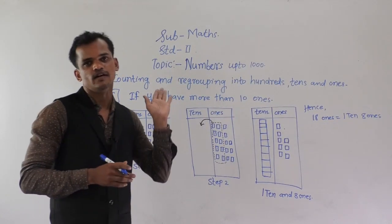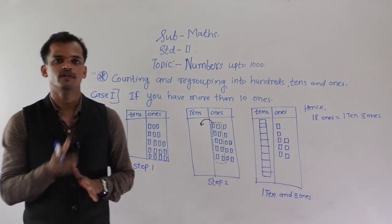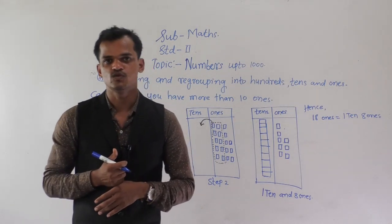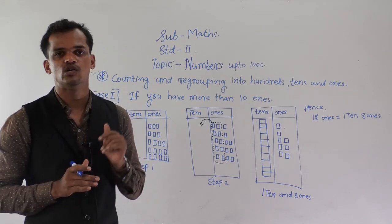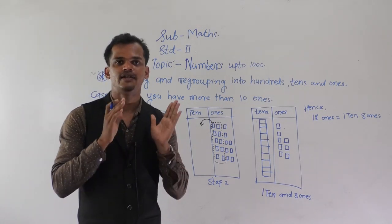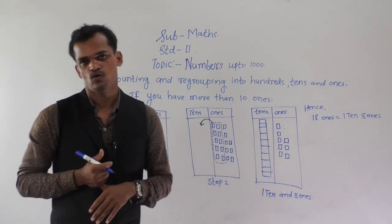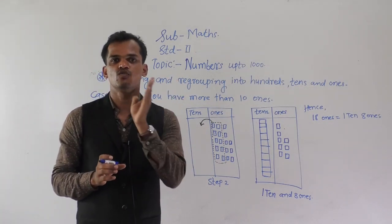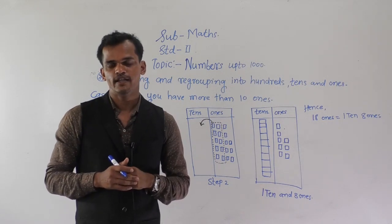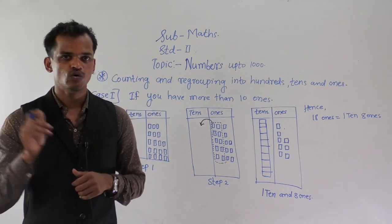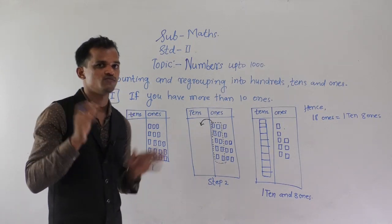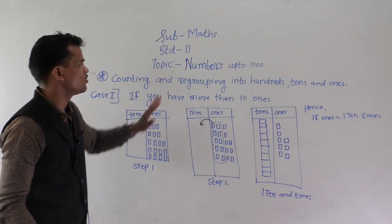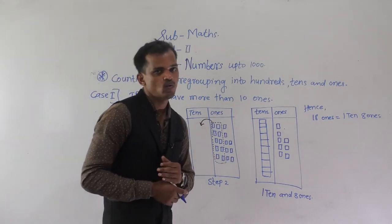Students, today we will learn the regrouping activities. In previous standard we have learned 1s, 10s, and 100s. We know 10 ones is equal to 1 ten and 10 tens is equal to 100. We should know how many 1s equal a ten and how many 10s equal a hundred, as this is very important for the regrouping activity. Today we will learn counting and regrouping into 100s, 10s, and 1s.